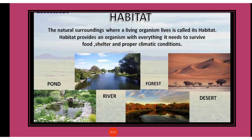The second one is Terrestrial Habitat. Plants and animals that live on land are said to be in a terrestrial habitat. Examples include forest, grassland, desert, coastal area and mountain regions. Based on vegetation and climatic conditions like temperature and rainfall, terrestrial habitats can be of various types.